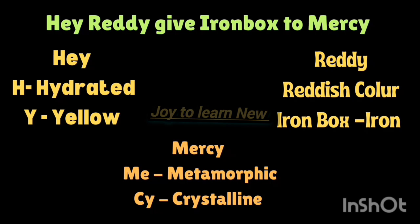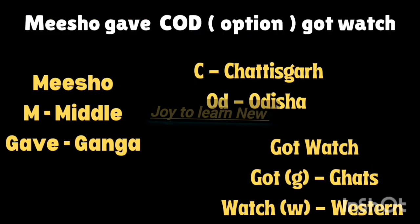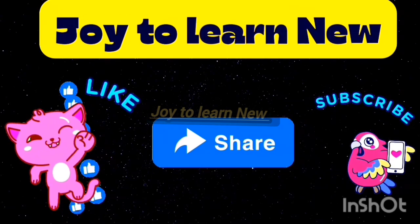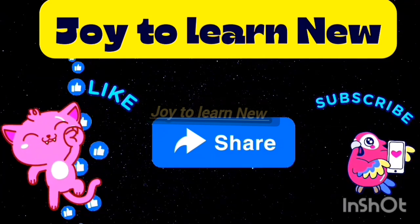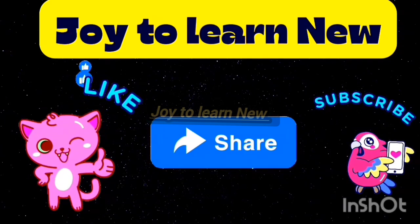Let's revise all three shortcuts. First: 'Ready, cry for ice cream at railway station, buy it and eat it decently.' Second: 'Misho gave COD option and we got watch.' Third: 'Hey Reddy, give iron box to Mercy.' Using these three shortcuts you can write all the important points under this topic. Hope you liked this video — please give a thumbs up, share with friends, subscribe, and thanks for watching till the end.